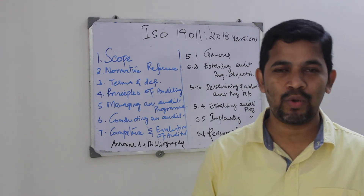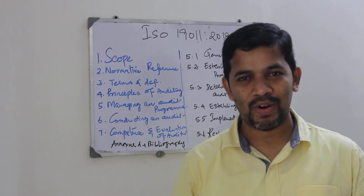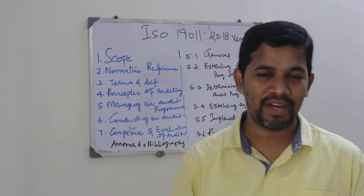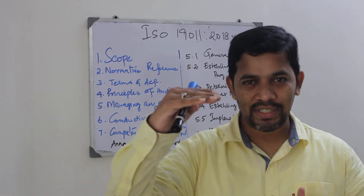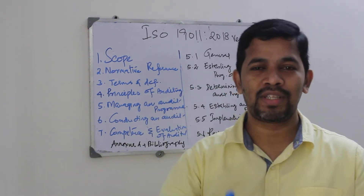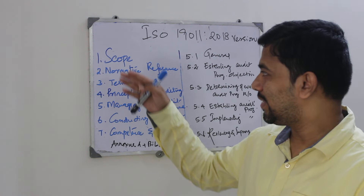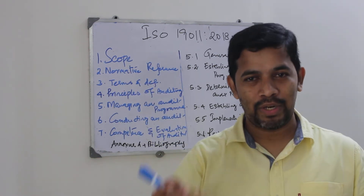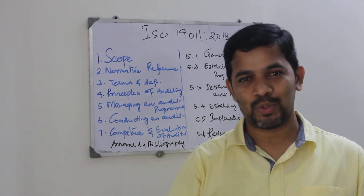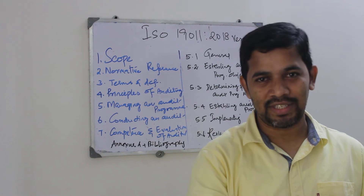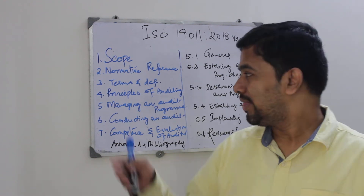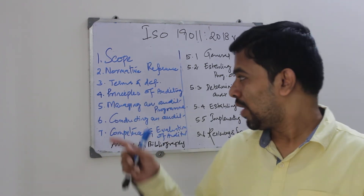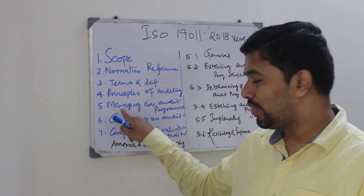ISO 19011, as you all know, is a standard for guidelines for auditing management systems. It has got seven clauses. The seven clauses are: scope is clause one, normative reference is clause two, and terms and definitions is clause three.